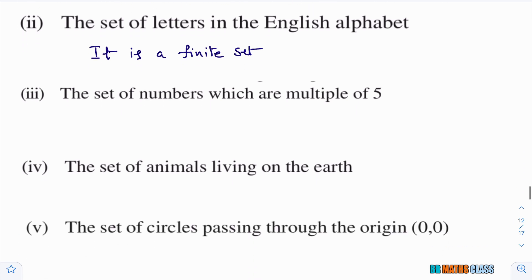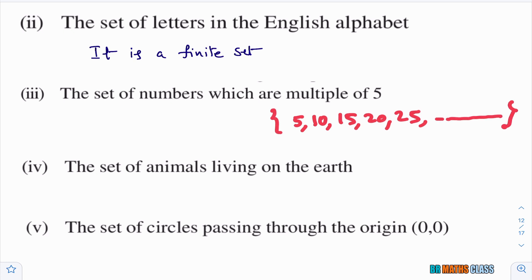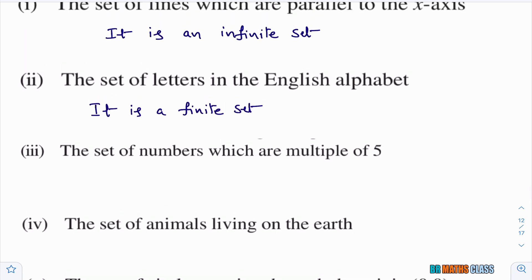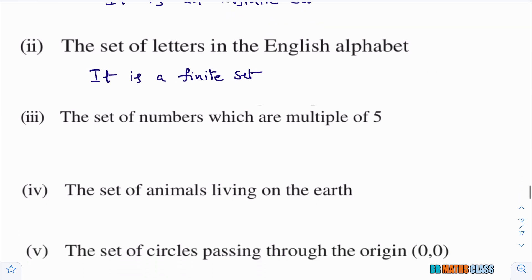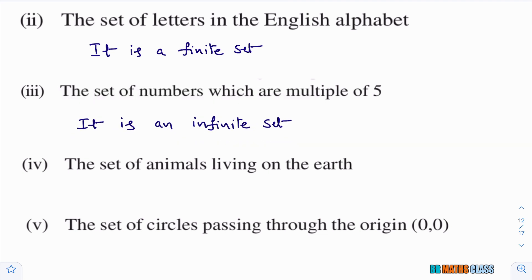Third bit: the set of numbers which are multiples of 5 — like 5, 10, 15, 20, 25 and so on. We can easily say that it is an infinite set. The set of numbers which are multiples of 5 is an infinite set.